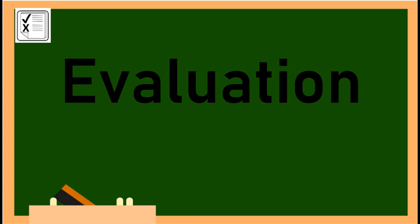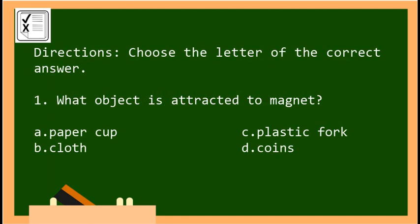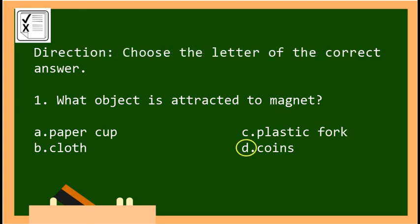Now let's have your evaluation. For number one: what object is attracted to a magnet? A, paper cup; B, cloth; C, plastic fork; or D, coins. The correct answer is letter D, coins.